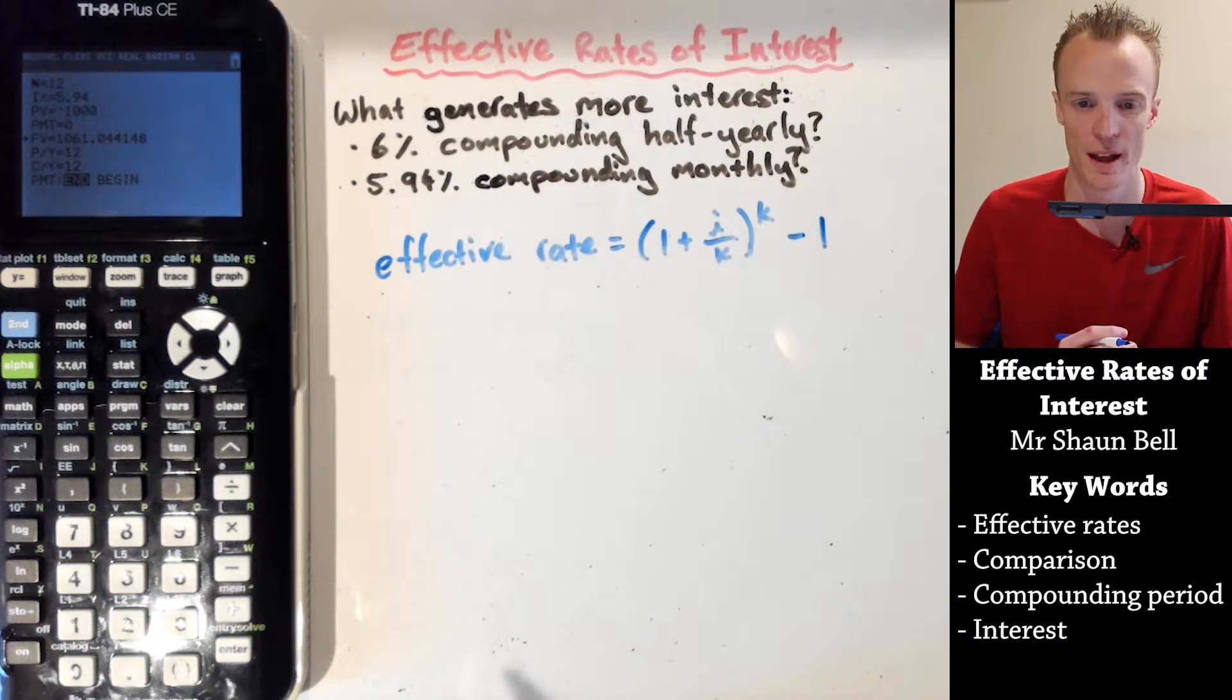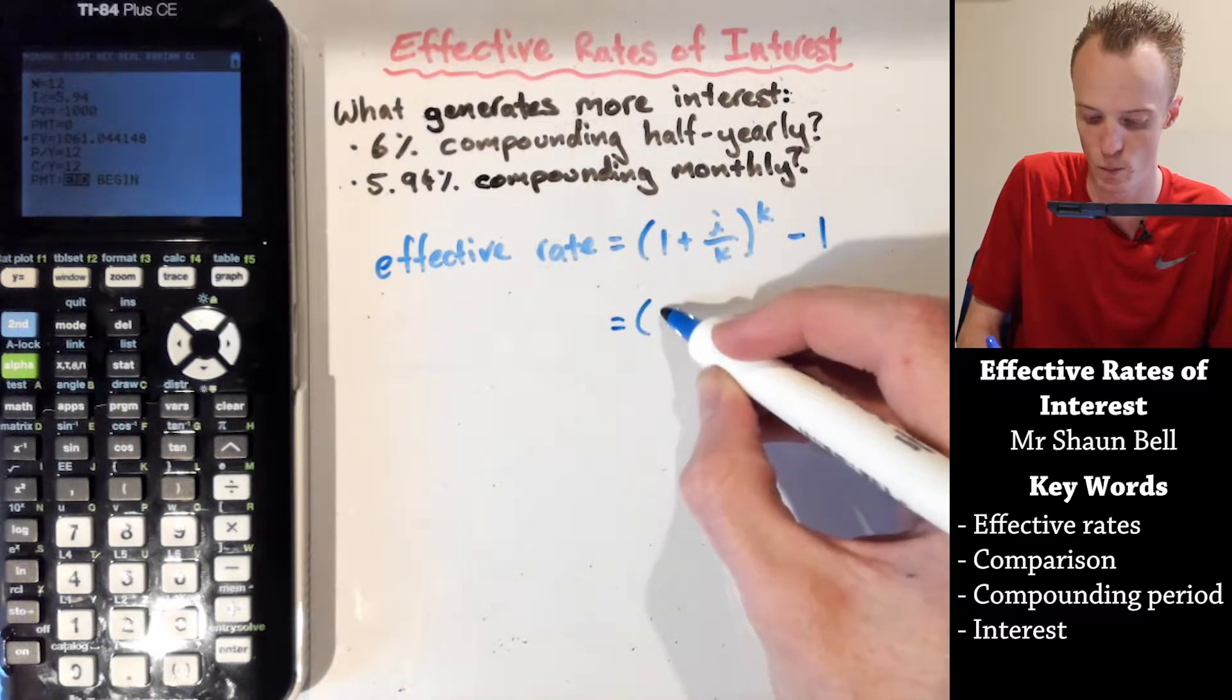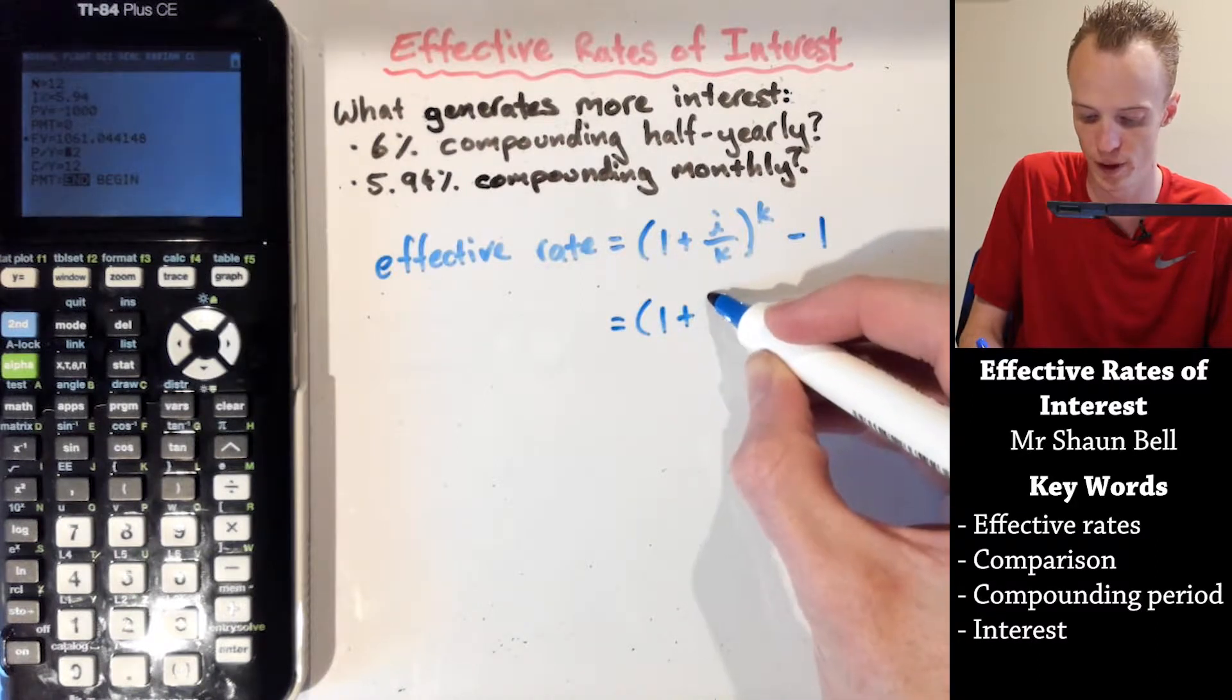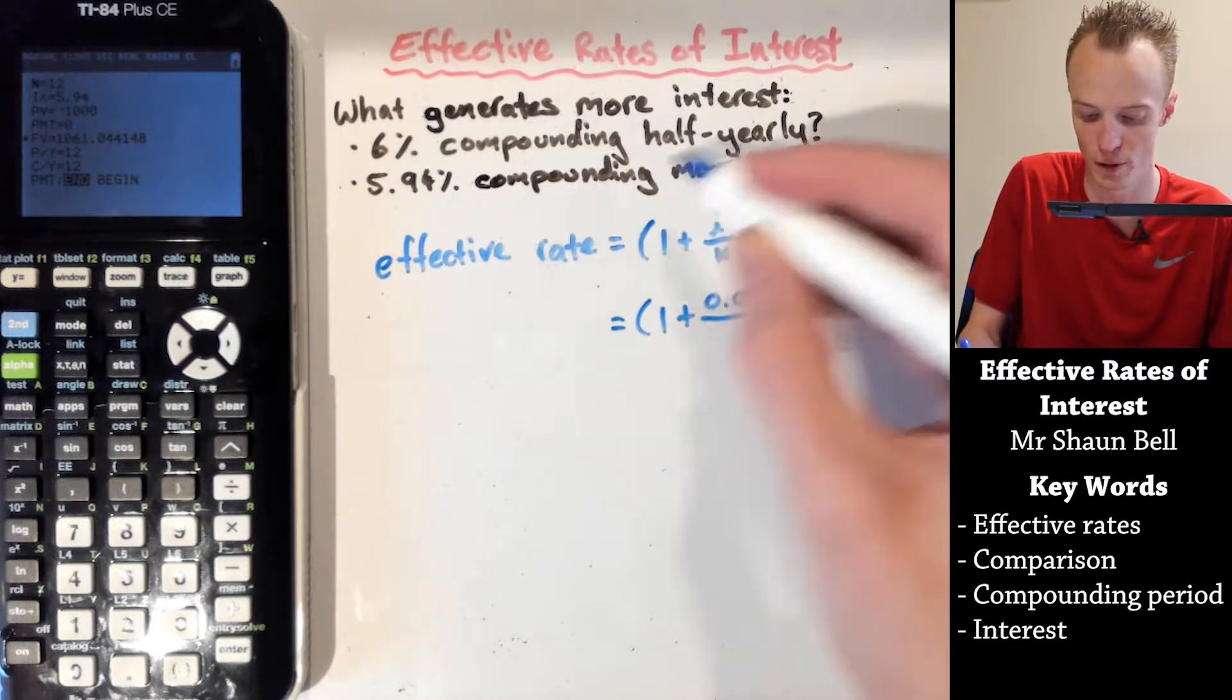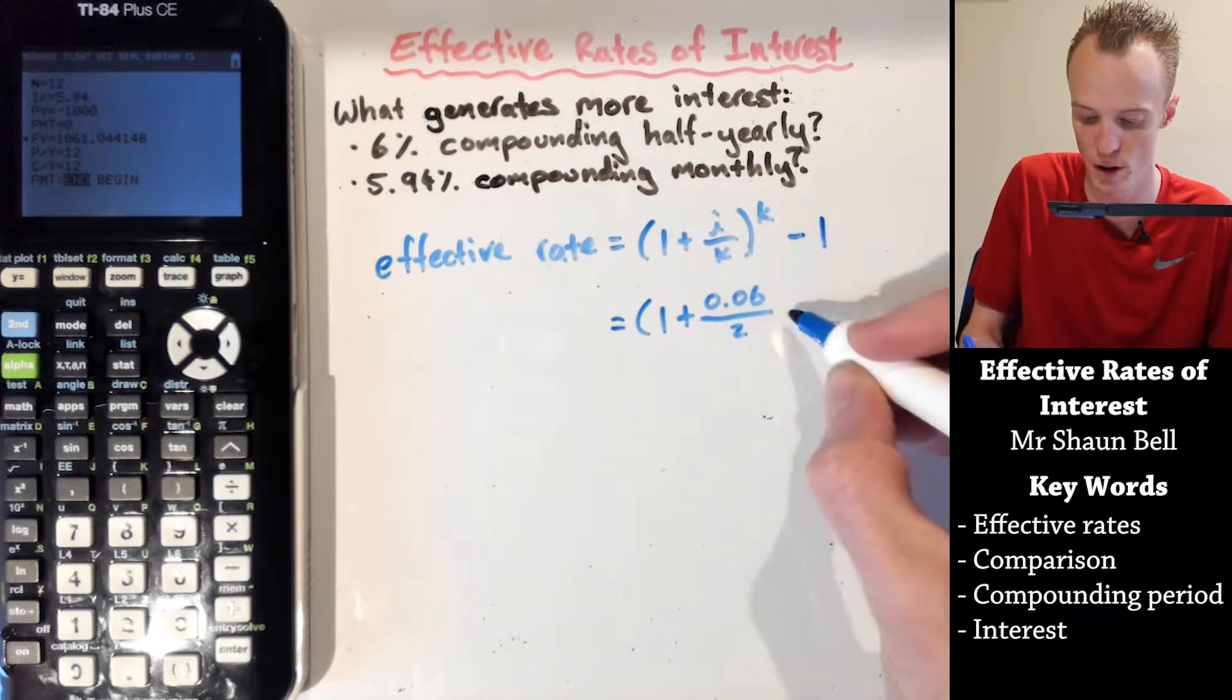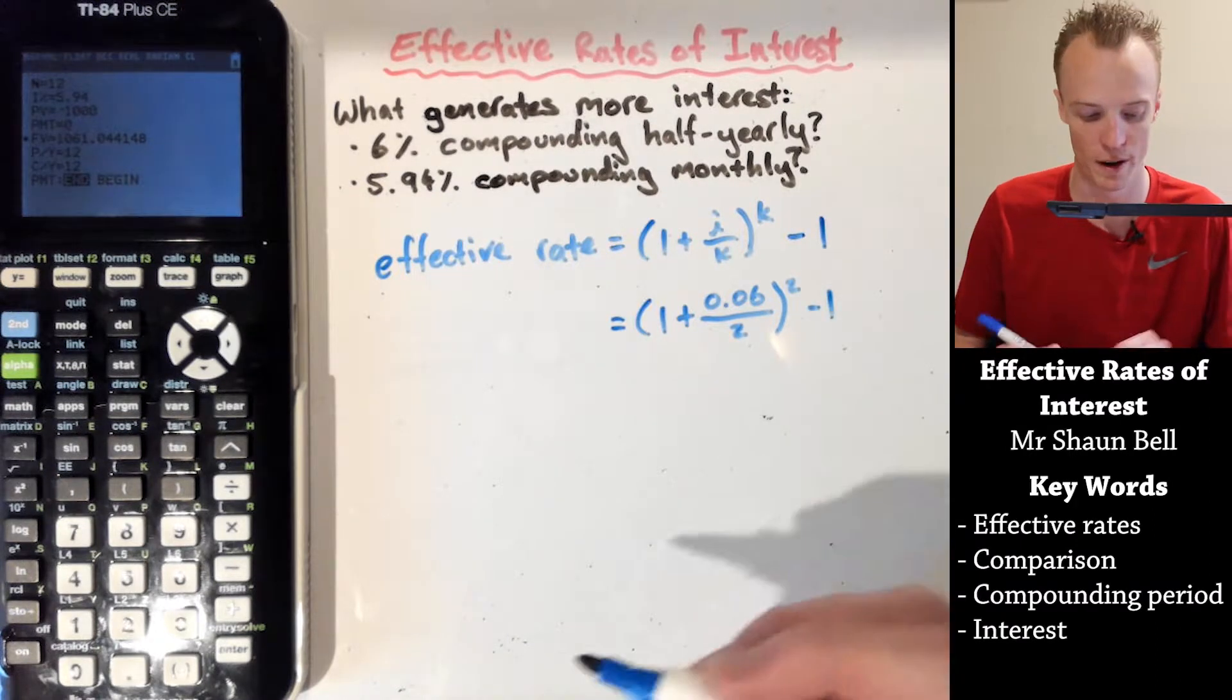Now if we were to do this by hand, in our 6% interest rate, that would be 1 plus the 6%, which we represent as a decimal 0.06, over the number of times it was compounding per year, which was twice, to the power of 2. And we would subtract 1 afterwards.